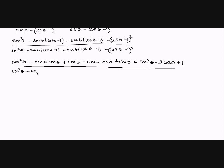So I'm going to multiply out now. I get sine squared theta minus sine theta minus sine theta cosine theta plus sine theta. And if I multiply out this binomial, I get cosine squared theta minus 2 cosine theta plus 1. All over sine squared theta minus sine theta cosine theta plus sine theta, then cosine squared theta minus 2 cosine theta plus 1.